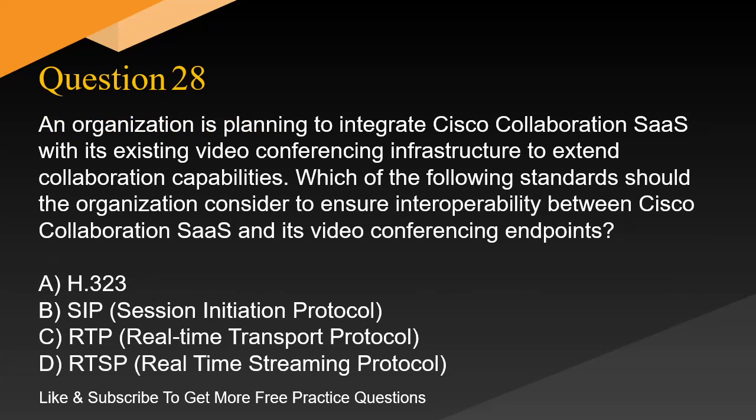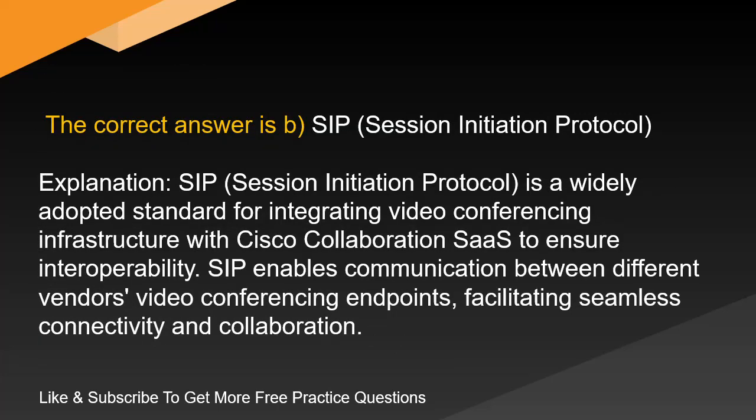Question 28. An organization is planning to integrate Cisco collaboration SaaS with its existing video conferencing infrastructure to extend collaboration capabilities. Which of the following standards should the organization consider to ensure interoperability between Cisco collaboration SaaS and its video conferencing endpoints? The correct answer is B. SIP, Session Initiation Protocol. SIP is a widely adopted standard for integrating video conferencing infrastructure with Cisco collaboration SaaS to ensure interoperability. SIP enables communication between different vendors' video conferencing endpoints, facilitating seamless connectivity and collaboration.